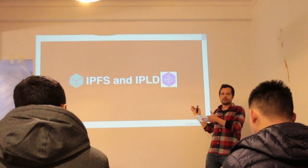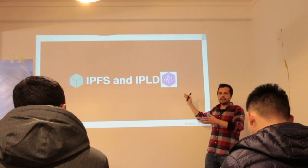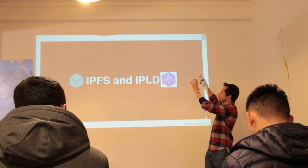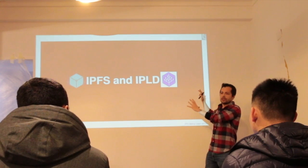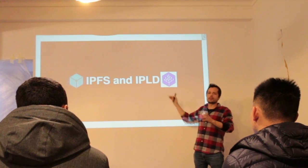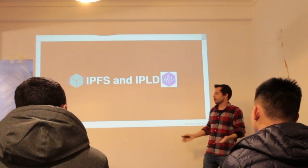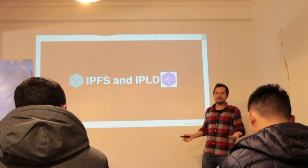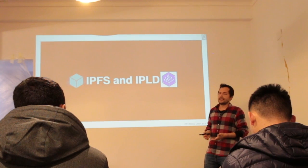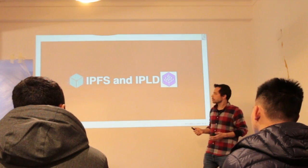So let's see how we can map this on top of what IPFS and IPLD provide. IPLD is interplanetary linked data — there are nodes that link to other nodes. Git is an IPLD structure, and any blockchain is an IPLD structure, for instance.